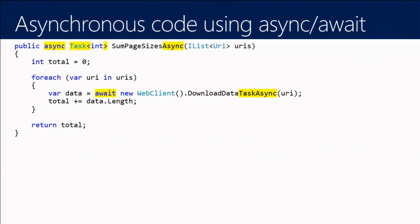For those not completely familiar with async: we add the async keyword, then instead of returning an actual value we return a Task — a generic task for a strongly typed result. We add Async to the end of the method name by convention. And then when we get to the I/O-bound operation, we say await — which is the equivalent of saying, thanks waiter, just go do something else now, I'll call you when I'm ready.